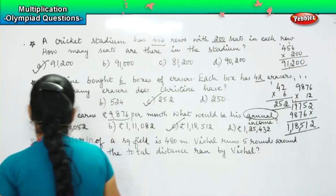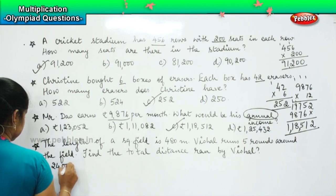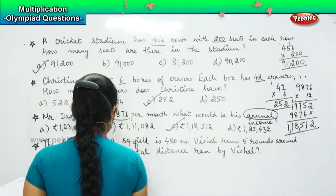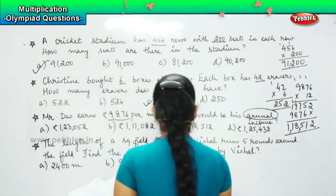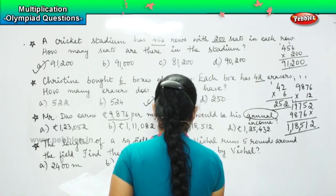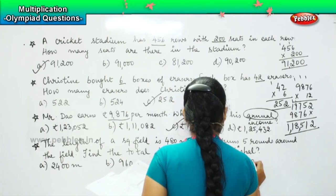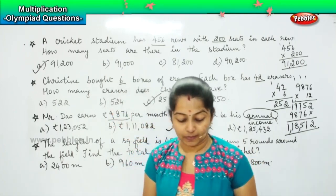And your options are: option A, 2400 meters. Option B, 960 meters. Option C, 9600 meters. Option D, 4800 meters.